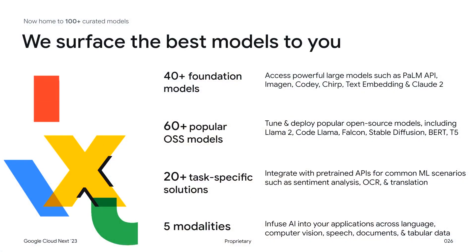These models work across a range of modalities like text, speech, embeddings, images, documents, and more. One key point is that we think of documents as their own modality — documents have text, images, and layout. As we move over time into a more multimodal world, inputs like documents are just going to be thought of as another distinct input format, separate from things like text, images, and speech.